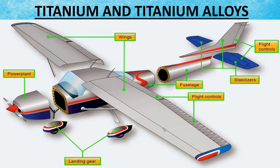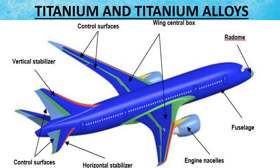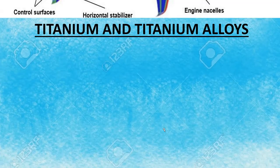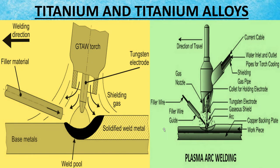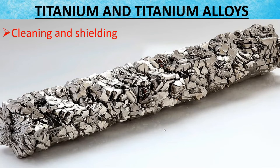Titanium is used in aircraft engine compressors, airframe structures, and various non-aircraft applications. Generally, titanium metals can be welded by gas tungsten arc or plasma arc techniques. Successful welding of titanium metals depends upon proper cleaning and shielding.